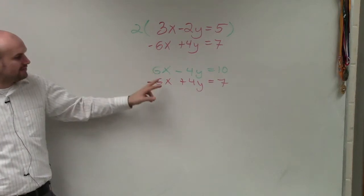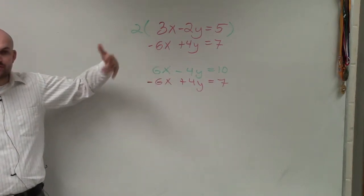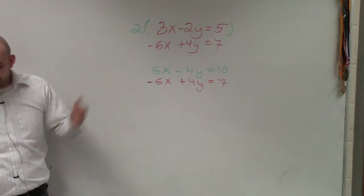And since one coefficient is positive and one's negative, should I add the equations or subtract the equations to eliminate, to get to 0? I should just add them.